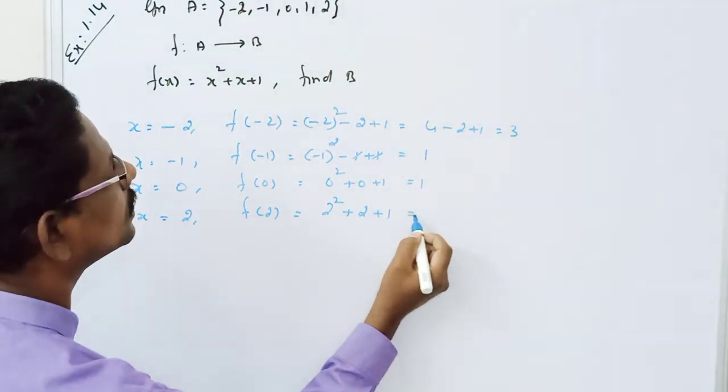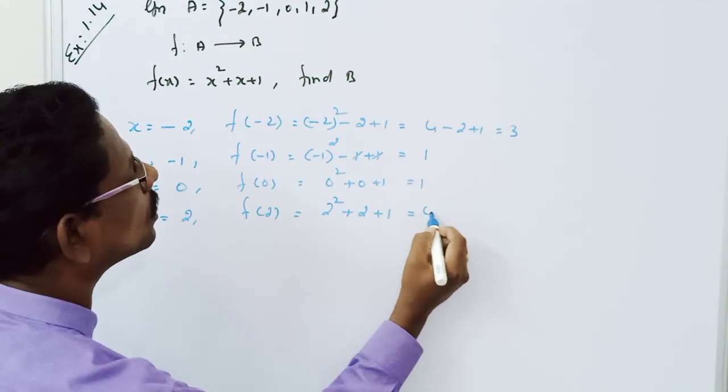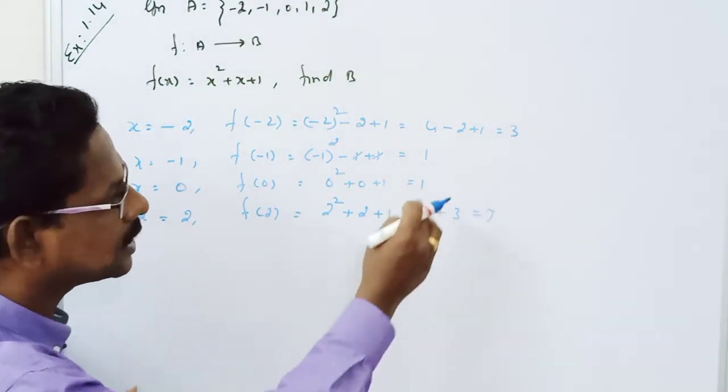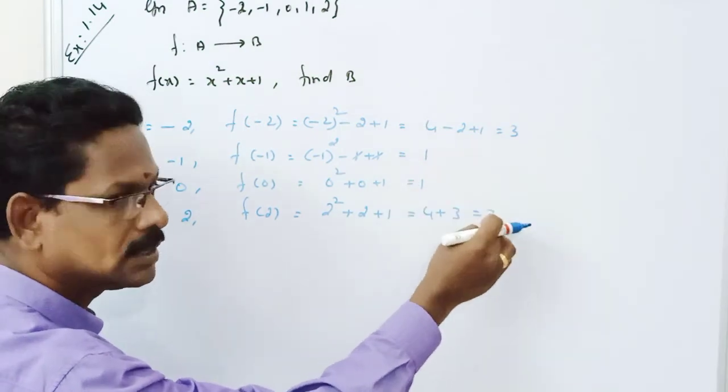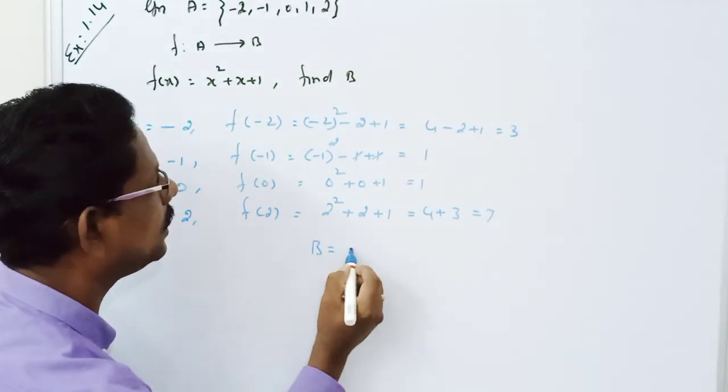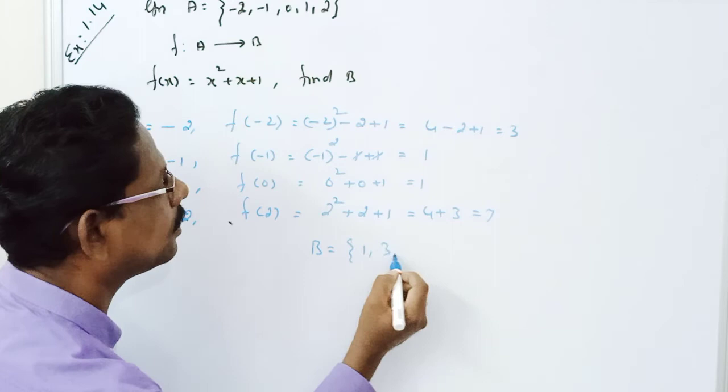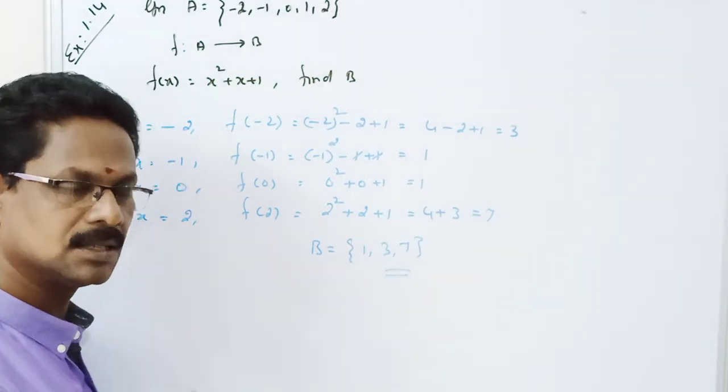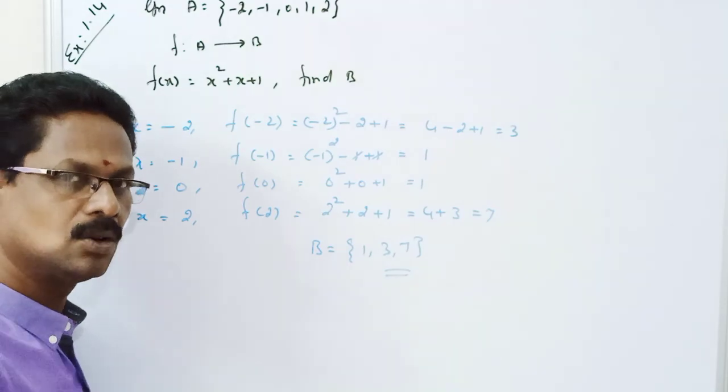That equals 4 + 3, which equals 7. Therefore, our range is {3, 1, 1, 7}. So set B equals {1, 3, 7}. If you have questions, study well, subscribe, and press the bell icon.